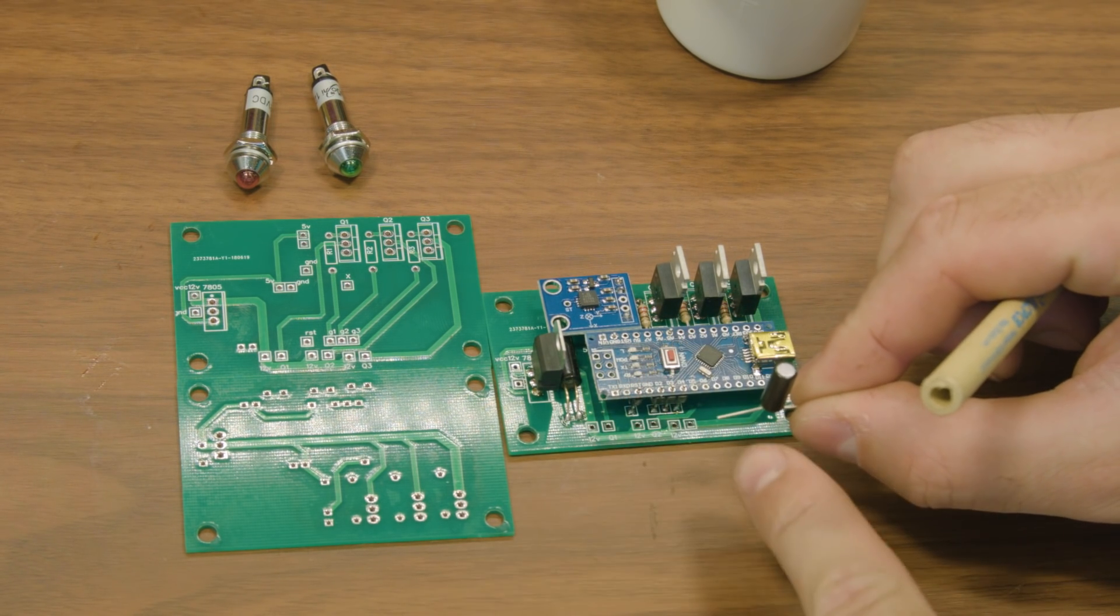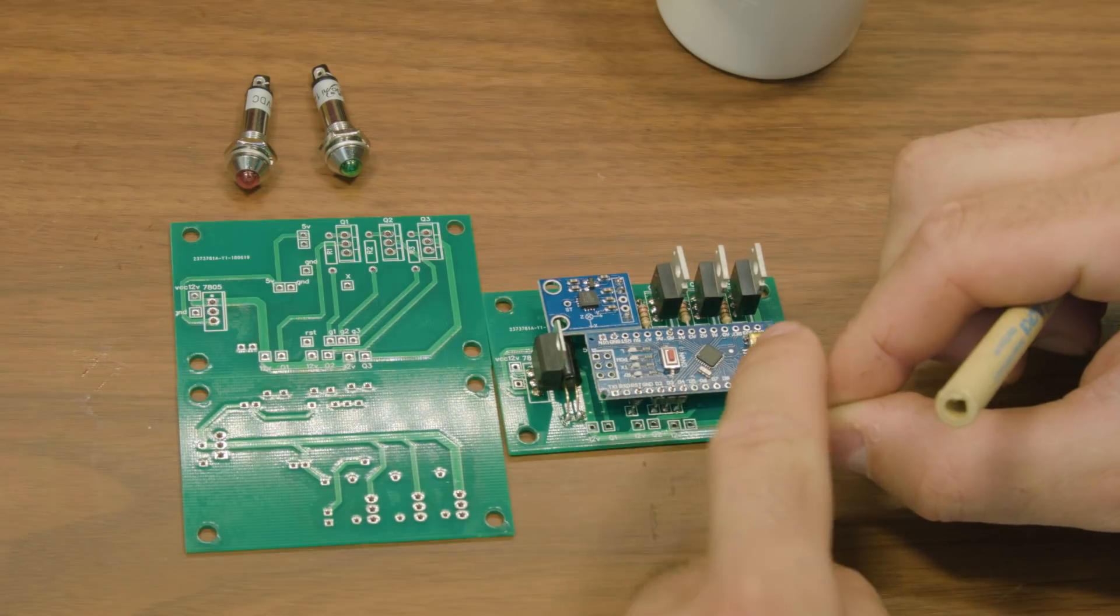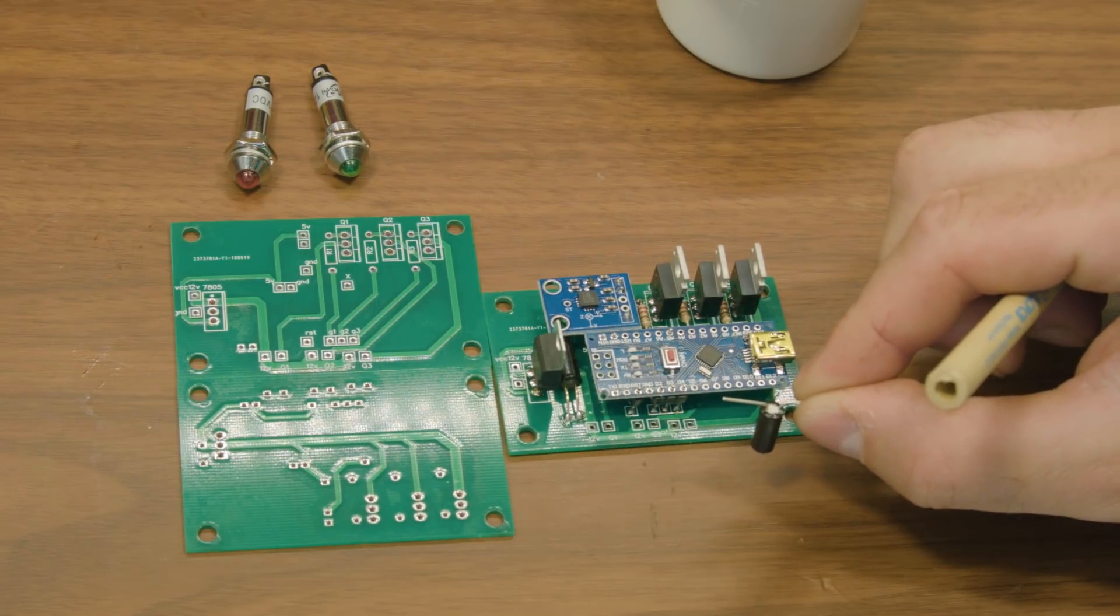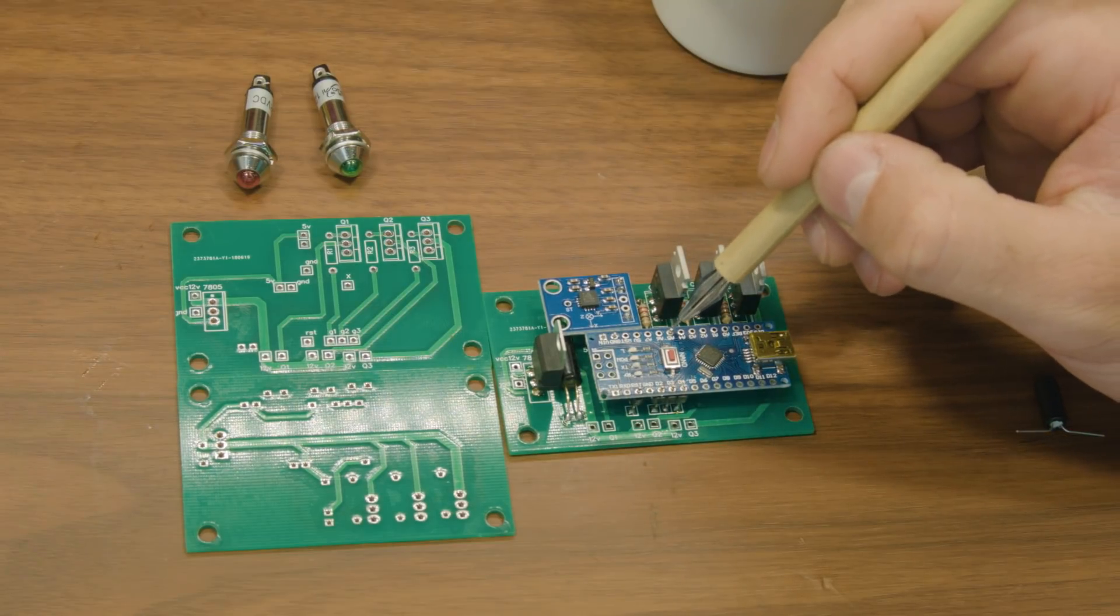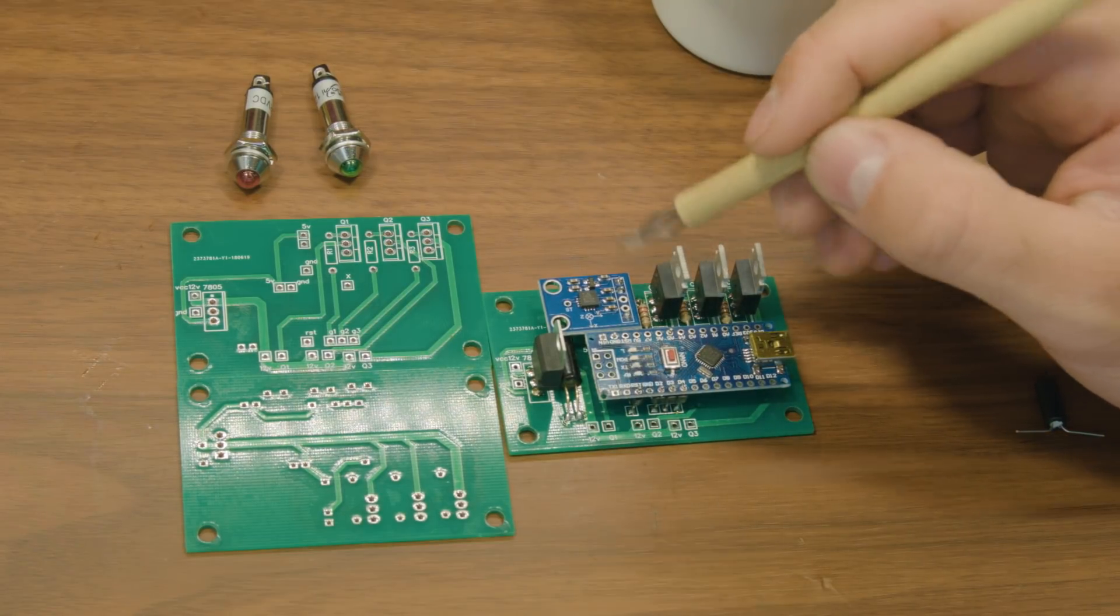When it's tilted this way, the circuit is closed, and this way the circuit is open. The X-axis is connected to analog 5, and the other two axes are not used.